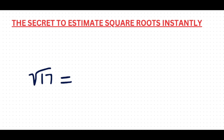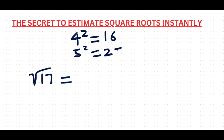Since 17 is not a perfect square, we look at the nearest perfect squares to it. Let's write them down: 4 squared is 16, and 5 squared is 25. Now, which of these two perfect squares is nearest to 17? Yes — 16 is the nearest perfect square to 17.